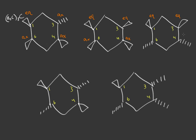For the next molecule, assuming carbon one is equatorial: it's an odd number and cis, so it's equatorial; odd to even but trans, so this is also equatorial; even to even and cis, so it's also equatorial — all equatorials. For the next one, assuming equatorial on carbon one: odd number and trans gives axial; odd to even and trans also gives axial; even to even but trans gives equatorial.